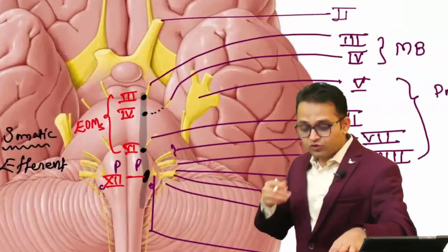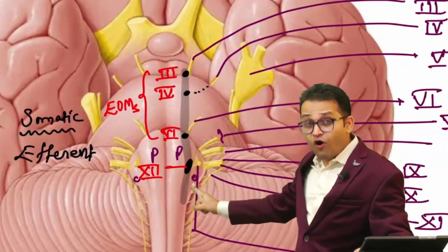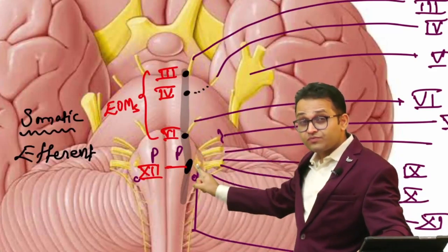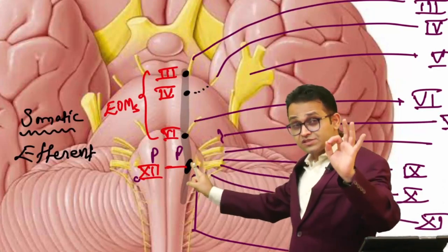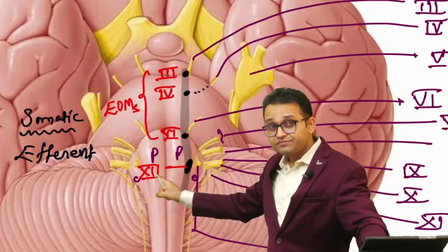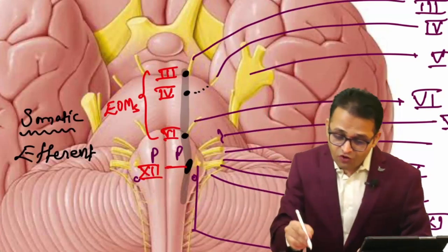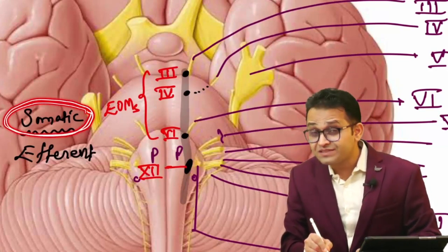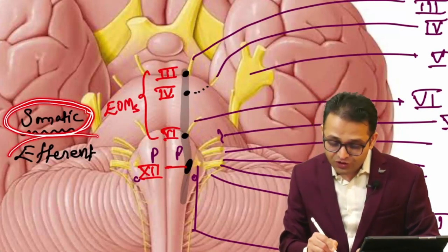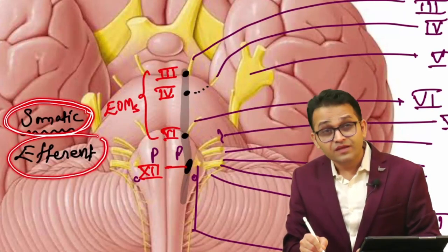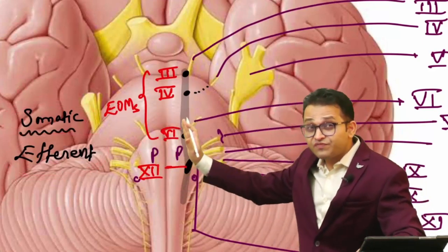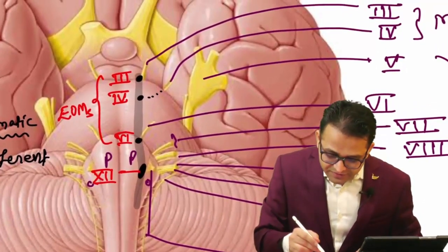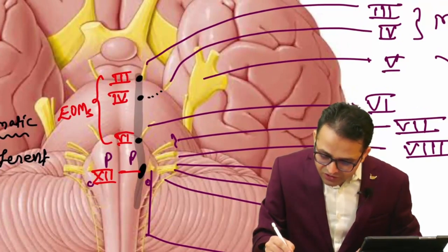After understanding these concepts: the first column of cranial nerve nuclei, when observed vertically, shows third, fourth, sixth, and twelfth cranial nerves. These all supply muscles of the eye and tongue, which are derivatives of somites. That is why we use the term somatic. These supply muscles, meaning motor activity, meaning efferent. So this is our somatic efferent column.